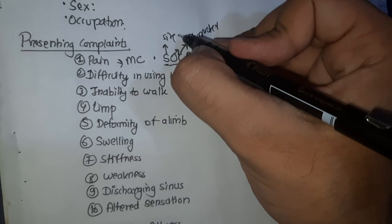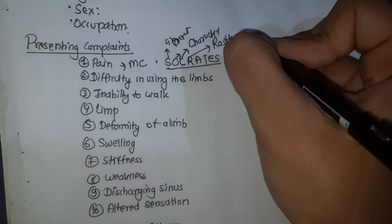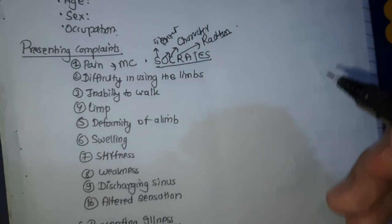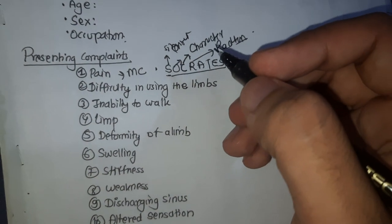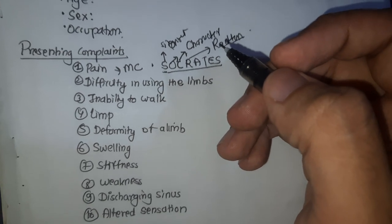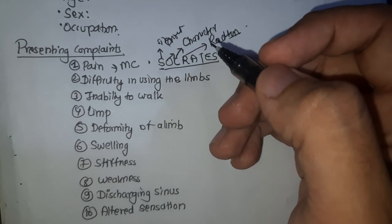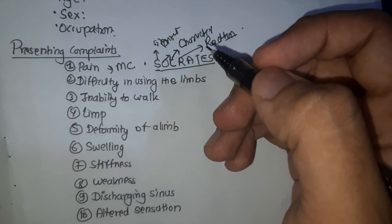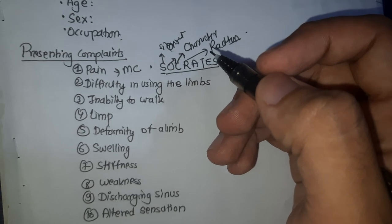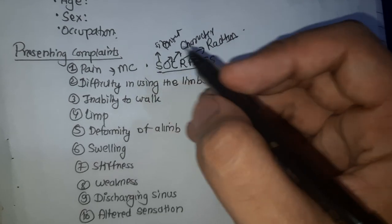Character — what is the character of the pain? Radiation — does the pain radiate to some other area? It is common in limbs for pain to originate in one part and radiate to another. For example, pathology in the neck may radiate pain to the shoulder and arm. Similarly, shoulder pathology may radiate pain into the arm. In sciatica, pain radiates from the back and gluteal region down the back of the thigh and knee.